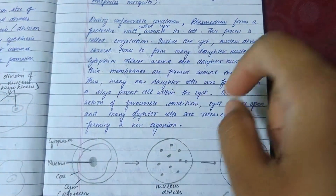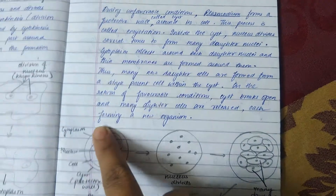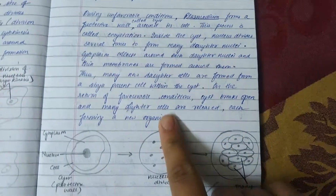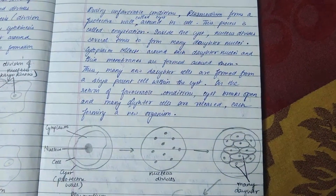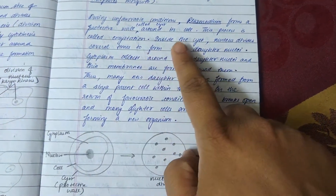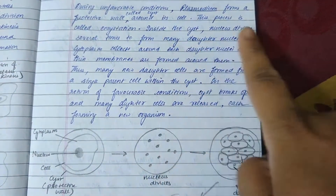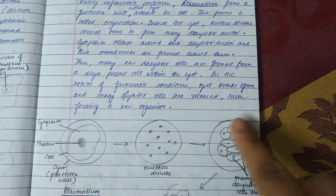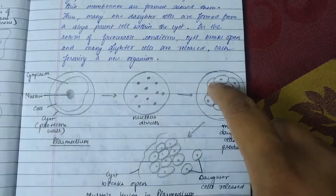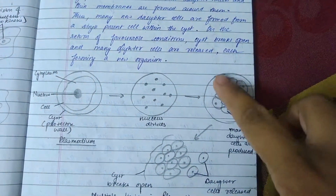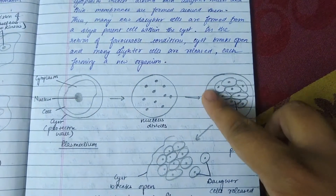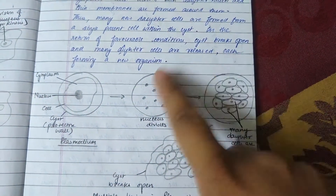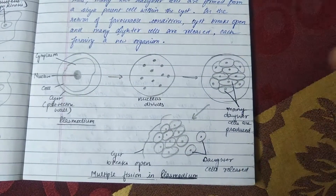When conditions are unfavorable, plasmodium forms a cyst — a protective wall around the cell. This process is called encystation. Inside the cyst, the nucleus divides several times to form many daughter nuclei. Cytoplasm collects around each nucleus with thin membranes, forming many new daughter cells within the cyst. When favorable conditions return, the cyst breaks and many daughter cells are released, each forming a new organism.